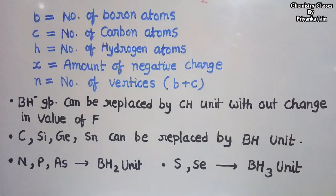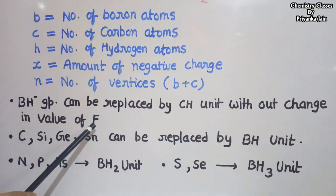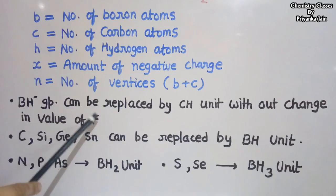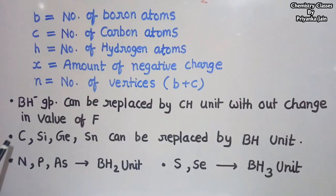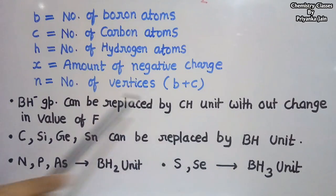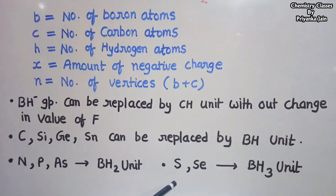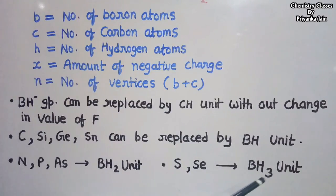One important note: the BH⁻ unit can be replaced by the CH unit without any change in the value of F — that is, the framework electrons remain the same. Carbon, silicon, germanium, and tin can all be replaced by the BH unit. Meanwhile, N, P, and As can all be replaced by BH₂ units, while sulfur and selenium can be replaced by BH₃ units.